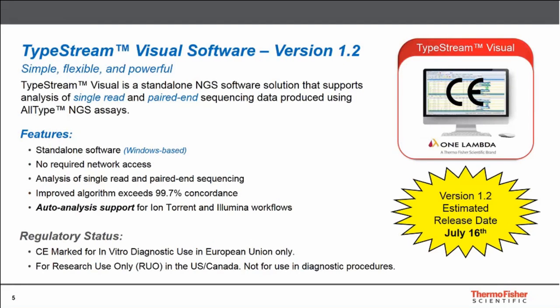OneLambda released our TypeStream Visual software back in July of 2017 with version 1.0. The main driver for releasing that version was our expanded support of not just the IonTorrent instrumentation for our All-Type NGS workflow, but additionally the Illumina MiSeq instrumentation as well. To go along with that expanded support of instrument platforms, we had to design a new piece of software that could handle the data output from both of those applications.